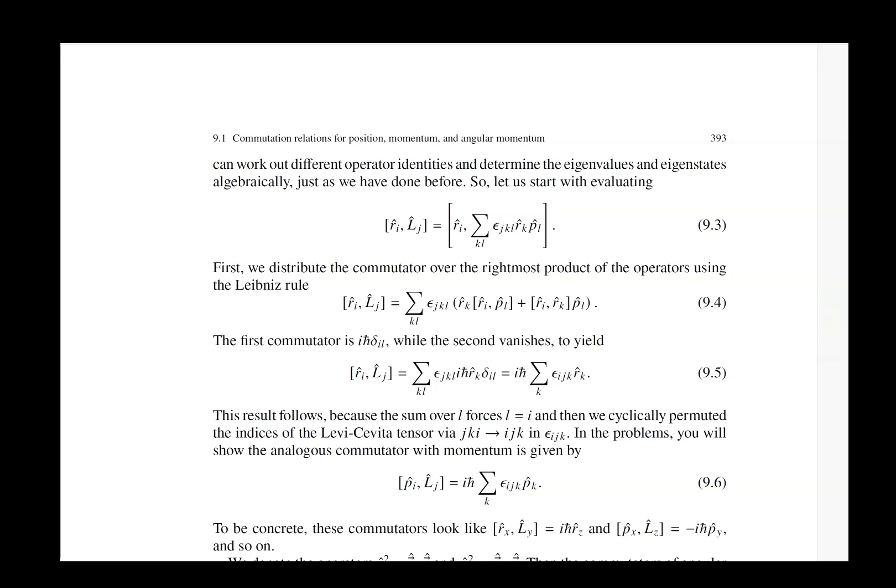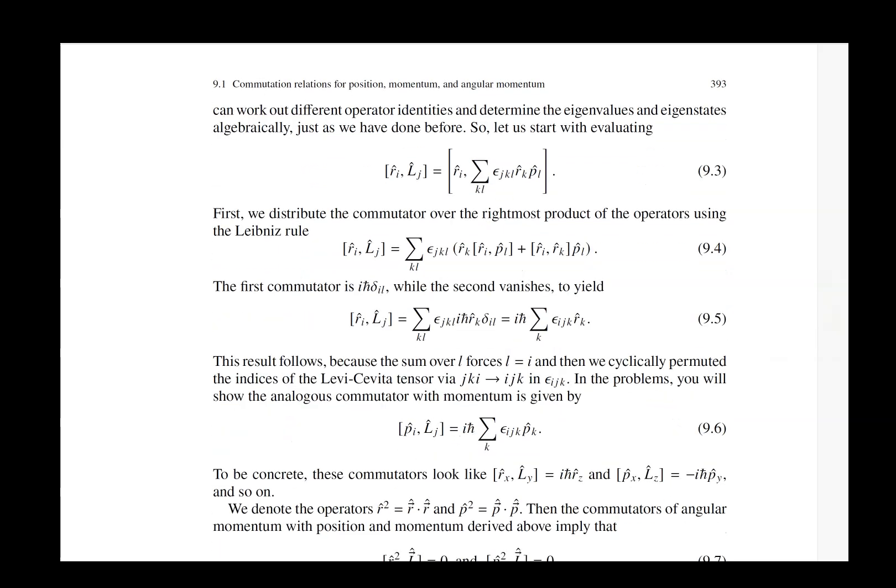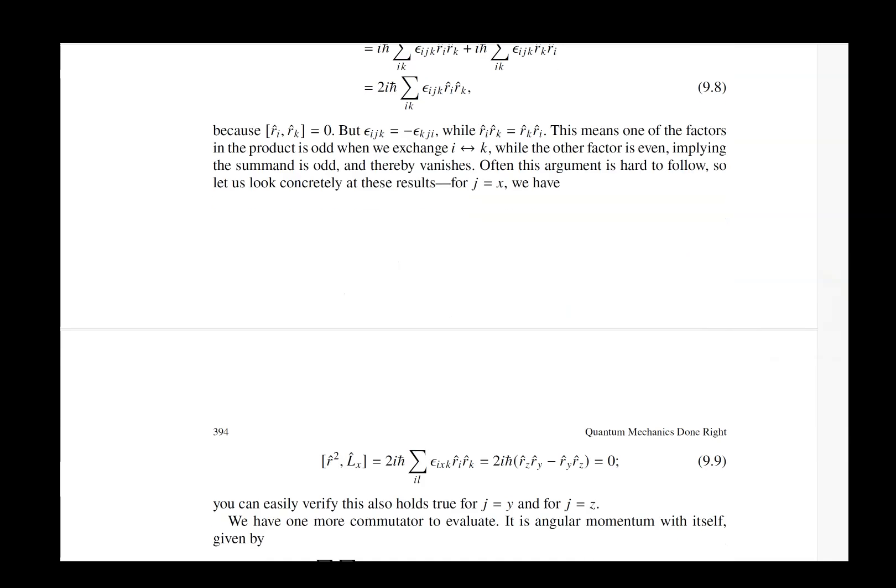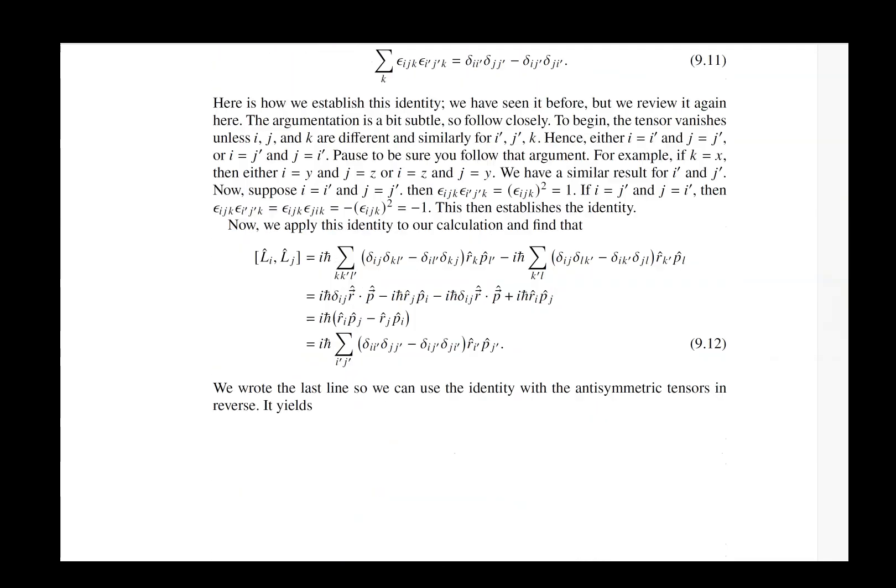Knowing that you have this general commutation relation of vector operators allows you to jump to a lot of different results when you're working with vector operators and you're having to do commutation relations with angular momentum such as if you're applying a rotation operator you know that the vector operator will get rotated by that rotation operator. So it's useful to understand this general result of a vector operator and we prove it explicitly for both position and momentum in this first section.